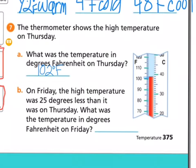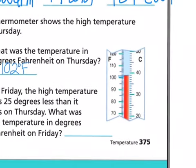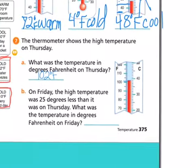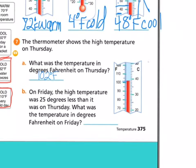And the next question: on Friday the high temperature was 25 degrees less than it was on Thursday. What was the temperature in degrees Fahrenheit on Friday? Okay, so the temperature definitely dropped in this scenario. They're saying on Thursday it was 102 degrees, and the temperature dropped by 25 degrees.